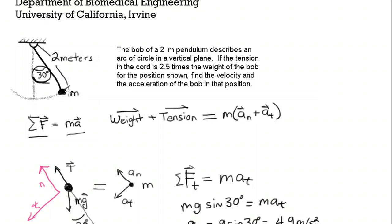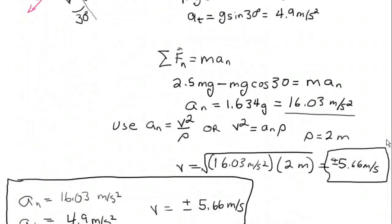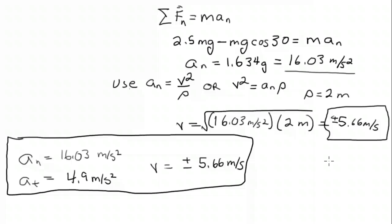In either case, this would be true that the tension in the cord is 2.5 times the weight of the bob. So if the mass is going up this way or down this way, that's true. So we'll just indicate that here with the arrows and a little plus sign or minus sign. And so the solutions are vector solutions. And you can see we have the magnitude and the direction.